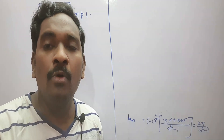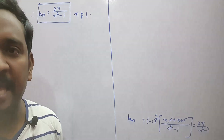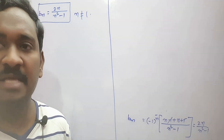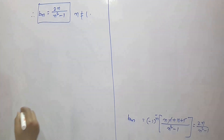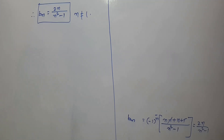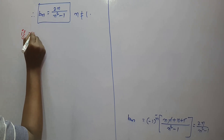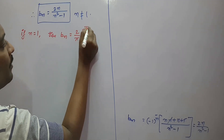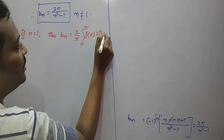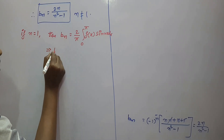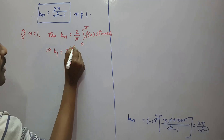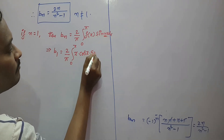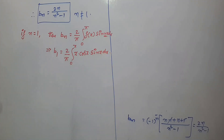Since the half-range sine series starts from n = 1 to infinity, the first term has n = 1, so we must find b₁ separately. For n = 1: b₁ = (2/π) · integral from 0 to π of f(x)·sin(x) dx = (2/π) · integral from 0 to π of x·cos(x)·sin(x) dx.